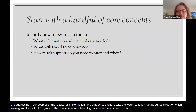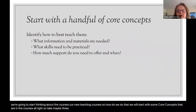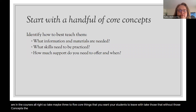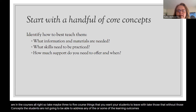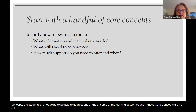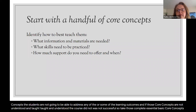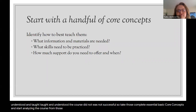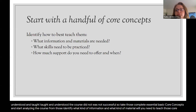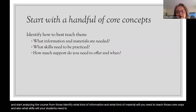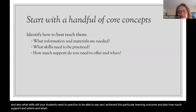So how do we do that? We start with some core concepts in the course. Take maybe three to five core things that you want your students to leave with — those without which students won't be able to address the learning outcomes. If those core concepts are not taught and understood, the course was not successful. Take those essential core concepts and start analyzing the course from them. Identify what material you'll need to teach those concepts, what skills students need to practice, and how much support you'll need to offer and when.